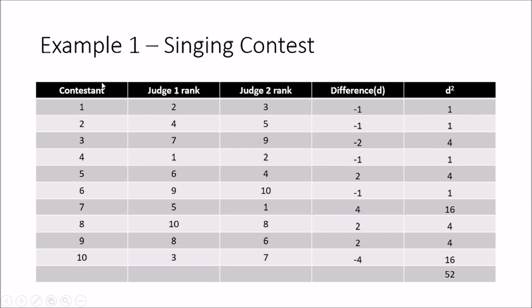Let's look at an example — a singing contest with ten contestants. Judge one ranks them in one manner and Judge two ranks them in another. What we are finding out is how alike Judge one and Judge two are thinking. A positive correlation means the two judges think alike; a negative correlation means they think differently; and a correlation close to zero means they are independent of each other in their judging.